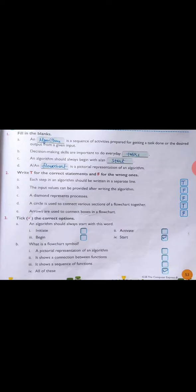A diamond represents processes - false. A circle is used to connect various sections of a flowchart together - true. Arrows are used to connect boxes in a flowchart - false. Third question: Take the correct option. An algorithm should always start with this word: